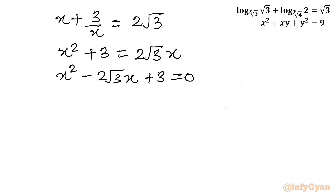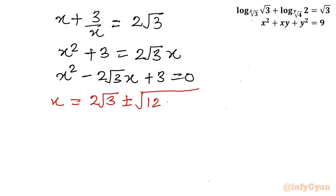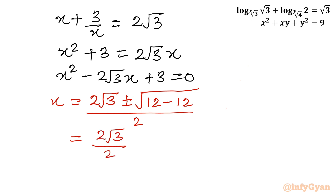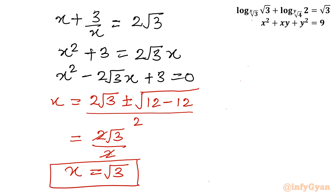Applying the Sridharacharya (quadratic) formula: x equals minus b, so 2 root 3, plus or minus the square root of b squared minus 4ac, all divided by 2a. Here b squared is (2 root 3) squared which is 12, and 4ac is 4 times 1 times 3 which is also 12. So the discriminant is zero and the square root vanishes. We get x equals 2 root 3 over 2, which simplifies to root 3.